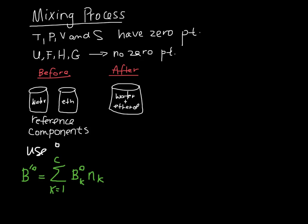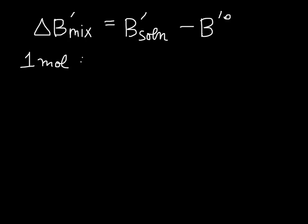Let's revisit our definition for mixing property. We can define the change in B associated with mixing - and this is for the total value - to be the value of B for the solution, or in the mixed state, minus the reference state. In terms of one mole, if we have only one mole, then we can do this on a per mole basis, so then we would just write delta B of mixing is B of the solution minus B of the components.